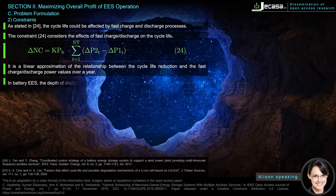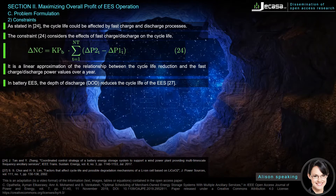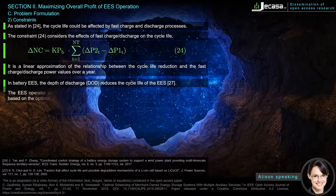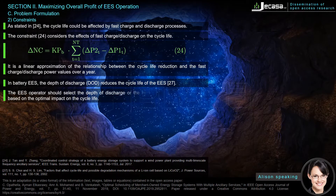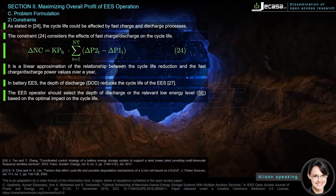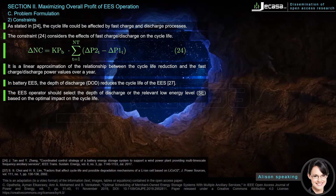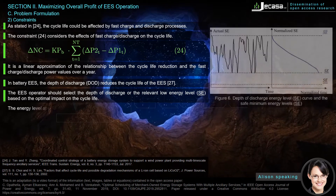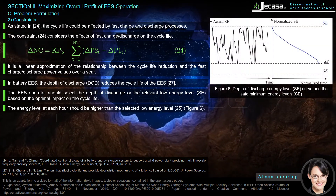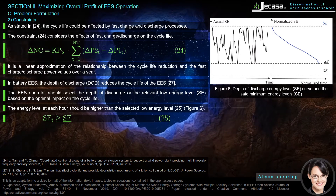In battery EES, the depth of discharge (DoD) reduces the cycle life of the EES. The EES operator should select the depth of discharge, or the relevant low energy level S_E, based on the optimal impact on the cycle life. The energy level at each hour should be higher than the selected low energy level, as given in equation 25 and Figure 6.